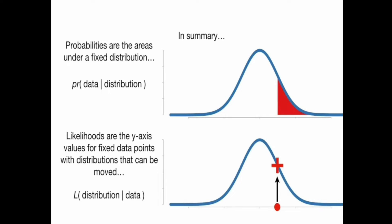In summary, probabilities are the areas under a fixed distribution, mathematically represented as probability of data given distribution — the chances of occurrence of an event given a standard distribution, where the mu value and standard deviation are fixed and the data is changing. Likelihoods are the y-axis values for fixed data points with distributions that can be moved — how likely the given data fits the distribution.